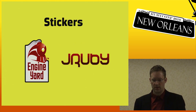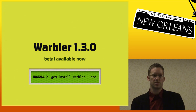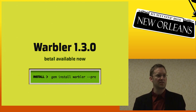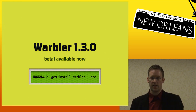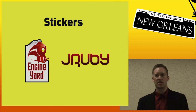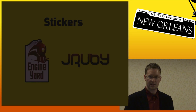I just released a beta 1 of Warbler 1.3 which has all the stuff I just showed you — you can install that now. I hope to have a full 1.3 release within a week or so; just getting things working before RubyConf prevented me from fixing a few bugs and polishing before the full release. Do check that out. There are JRuby stickers up here — feel free to grab one. Thanks a lot.